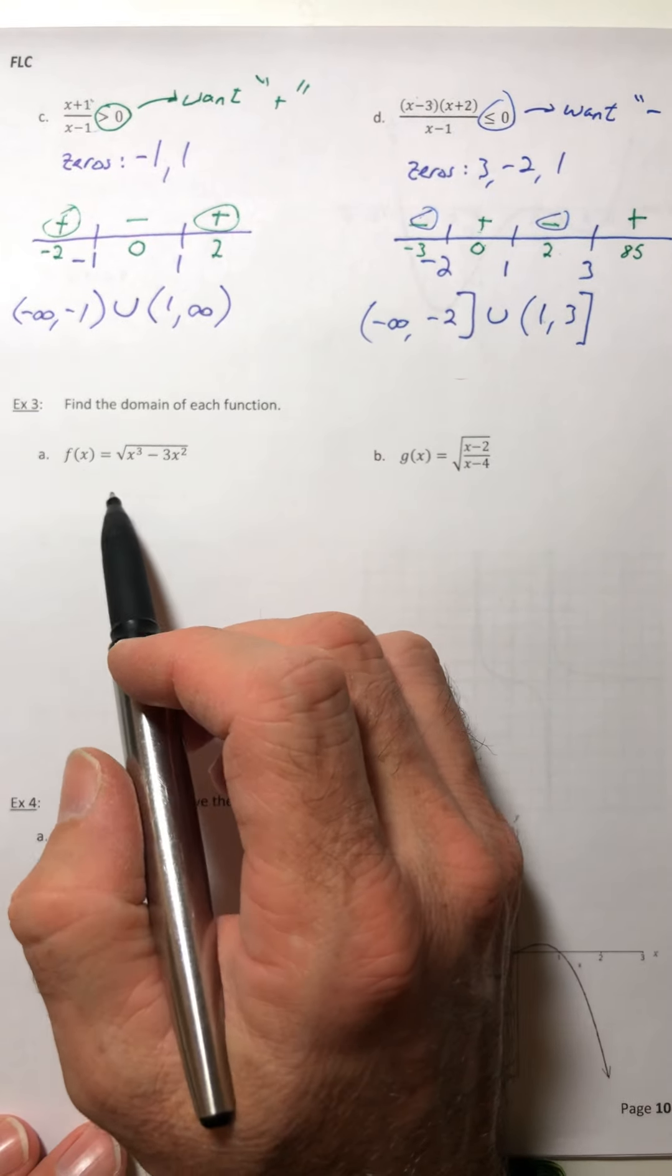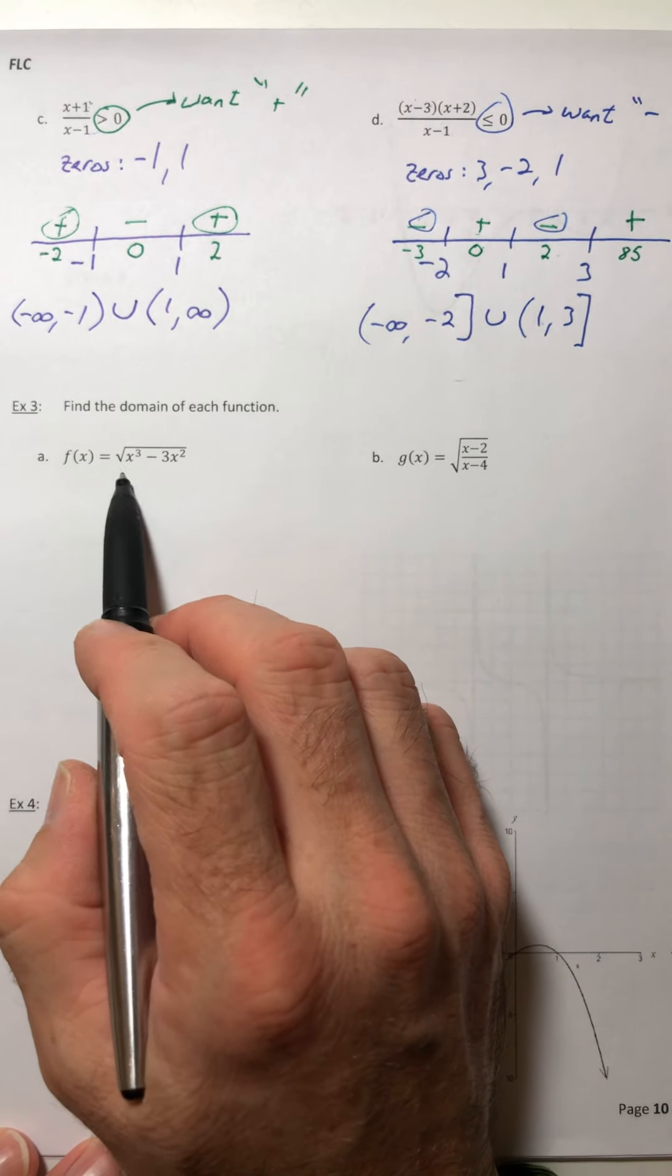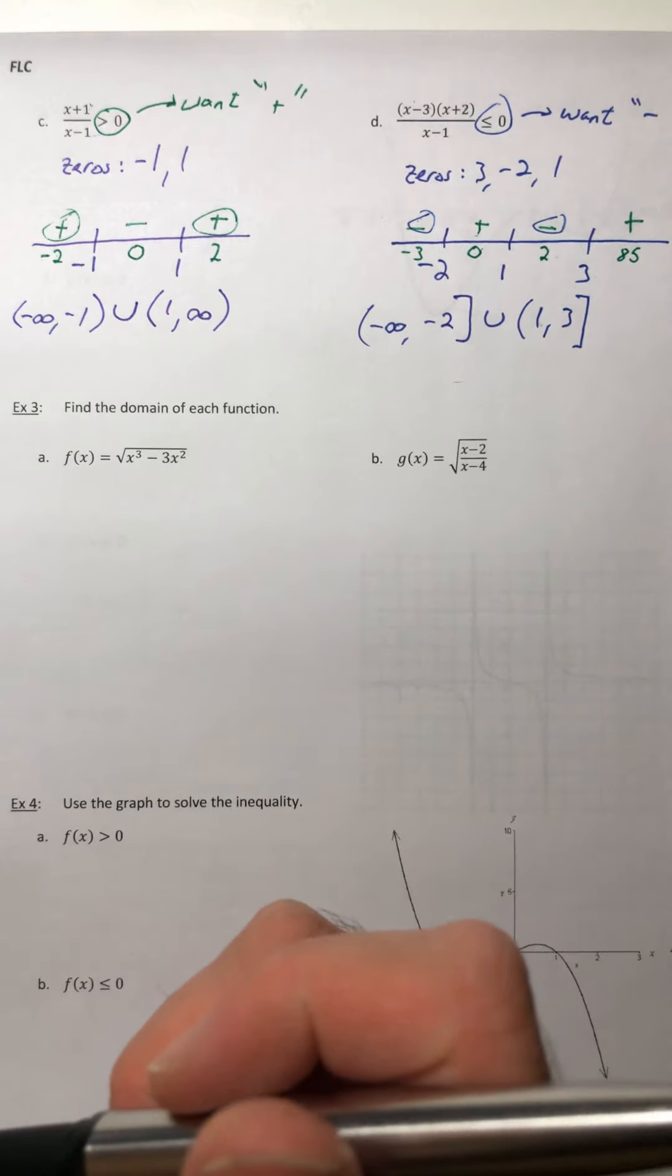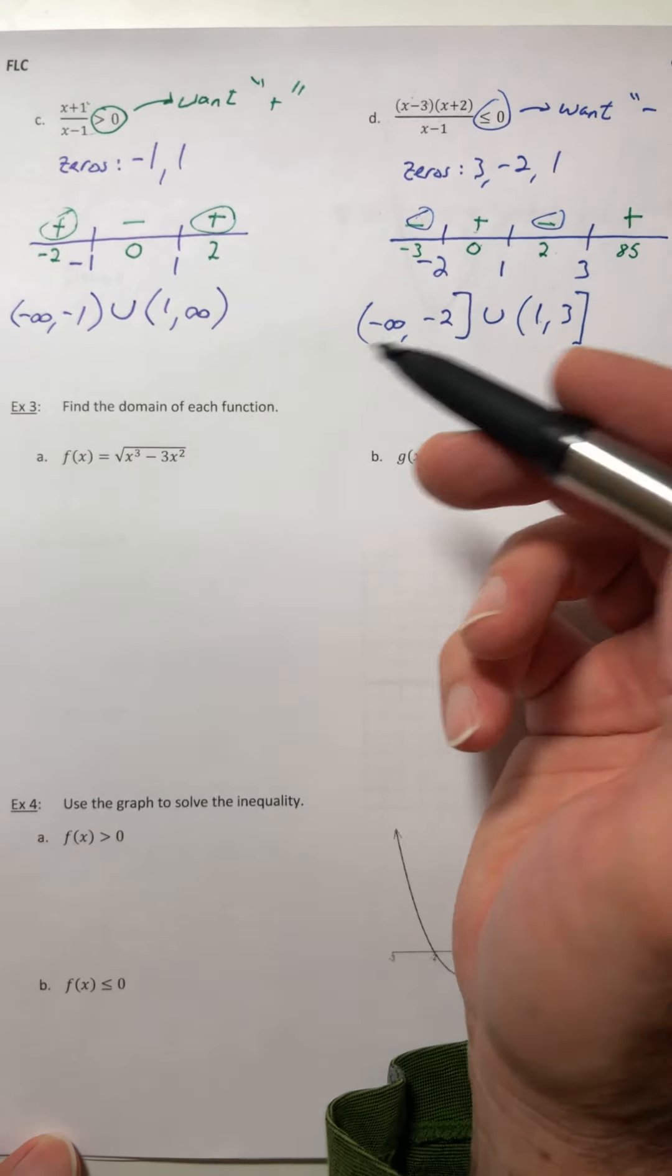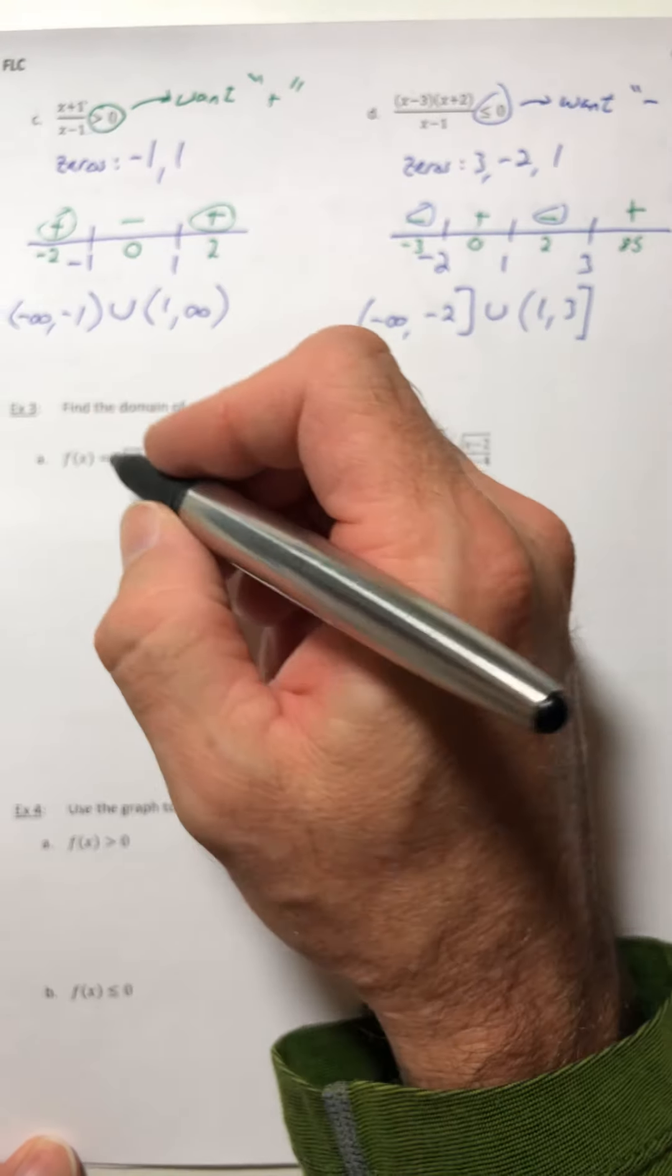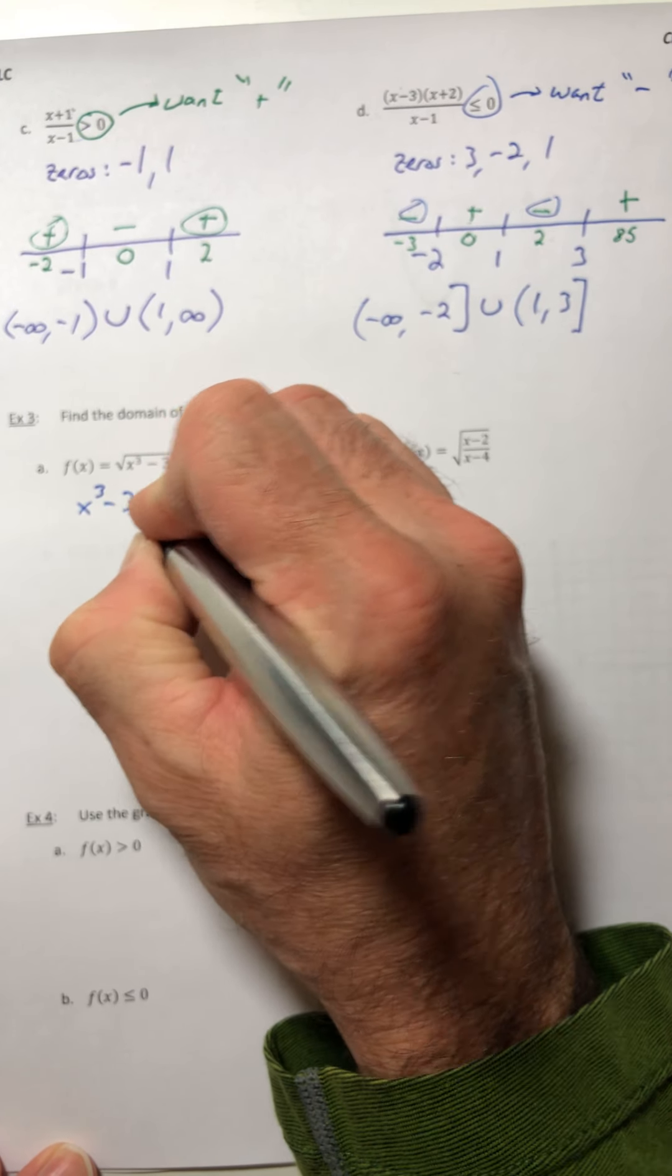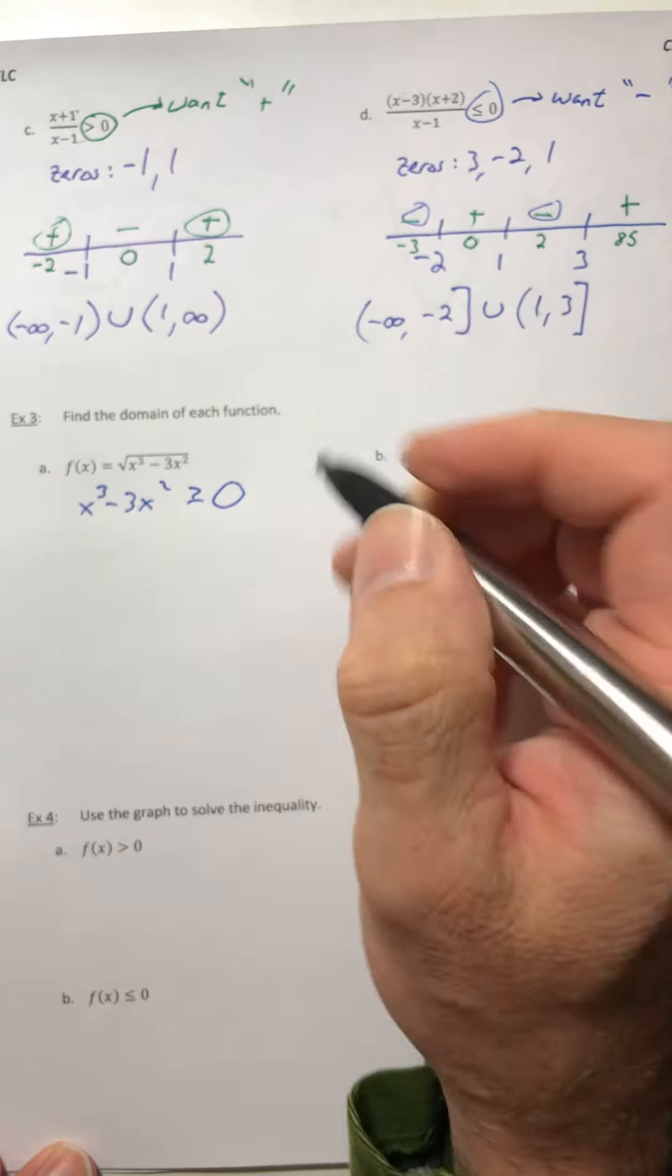All right campers, let's try to find the domain of these functions. So we've got a square root. A couple of chapters ago we saw how to find the domain of a square root. That was where you took whatever's on the inside and you set it greater than or equal to zero because the inside can't be negative.